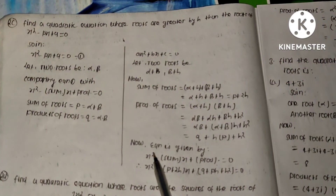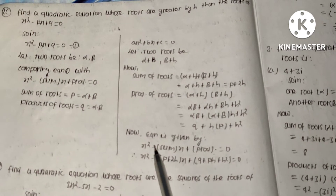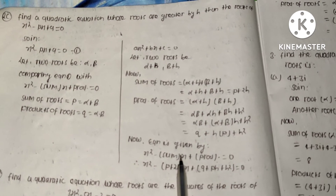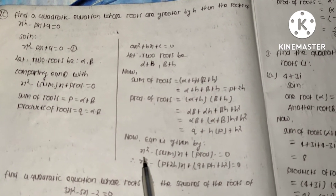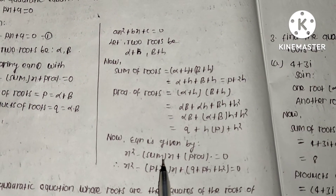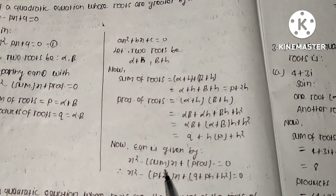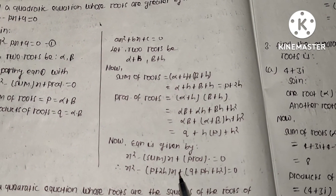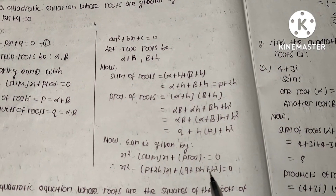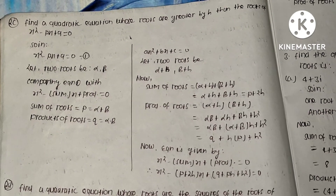The required equation is given by x squared minus (sum)x plus (product) equals zero. Substituting the values, the equation becomes x squared minus (p plus 2h)x plus (q plus ph plus h squared) equals zero, which is the required equation. Thank you for watching this video.